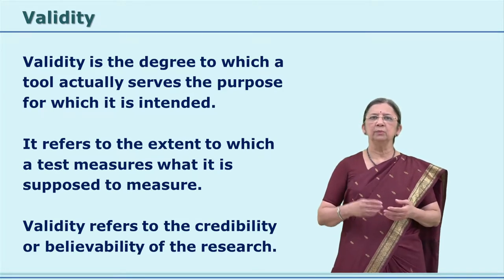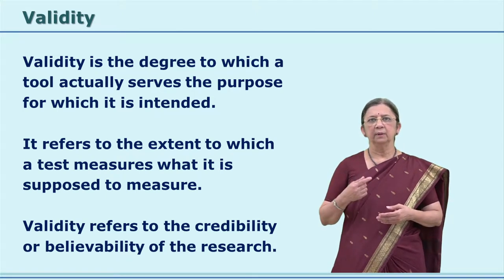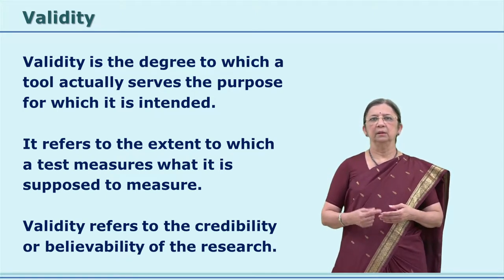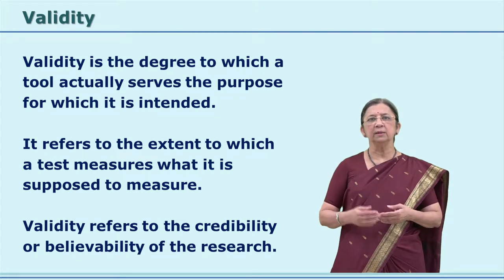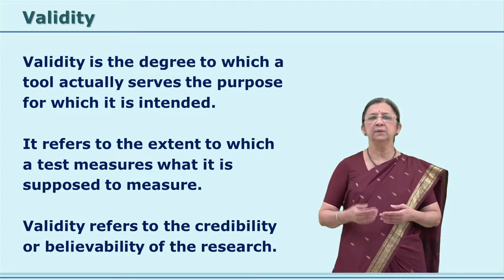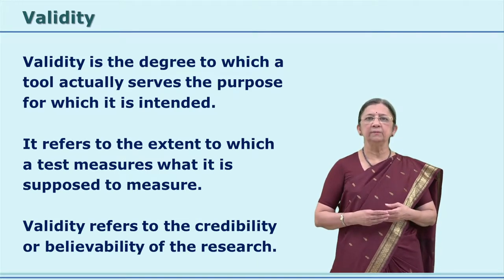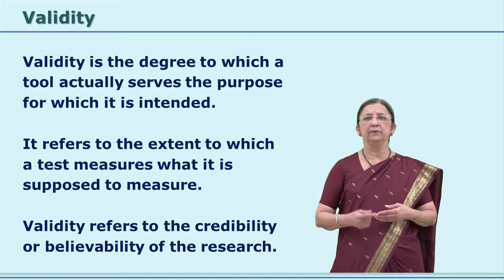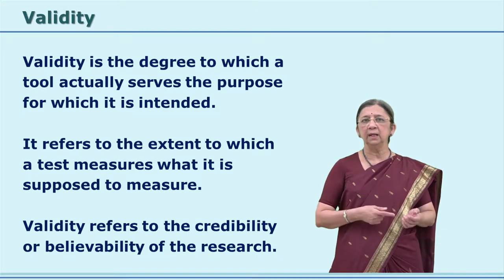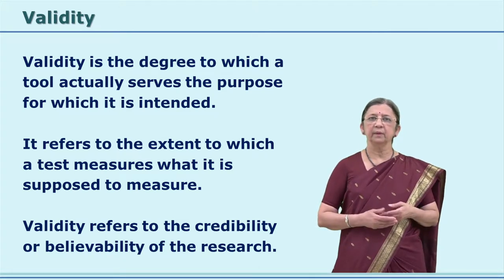For example, if you want to check the height, though a weighing machine is accurate, it is not valid. It is not a valid tool because it is not serving your purpose of measuring the height. Validity refers to the credibility and believability of your research. If your tool is valid, then people would believe that your research is good and the findings will be credible.